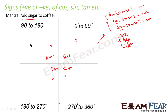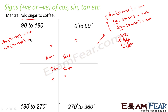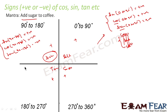For 90° to 180°, only sine is positive. So sine of any number from 90° to 180° is positive. But cos of any number from 90° to 180° becomes negative, and tan of any number in this range is also negative. So in the first quadrant all are positive, and in the second quadrant only sine is positive.